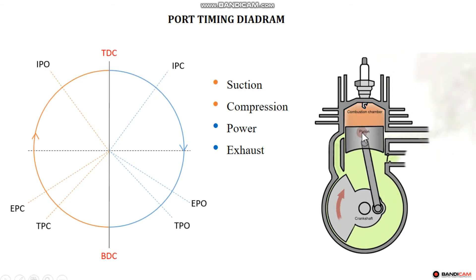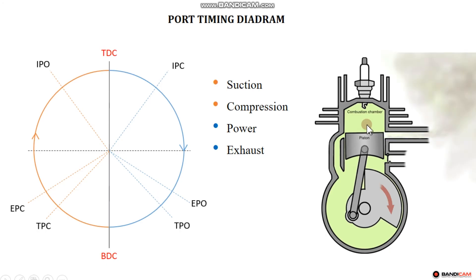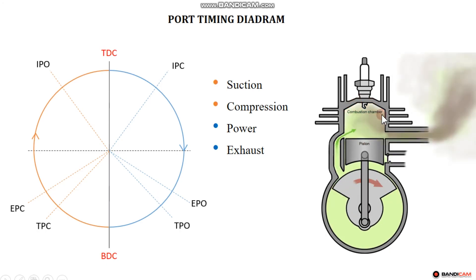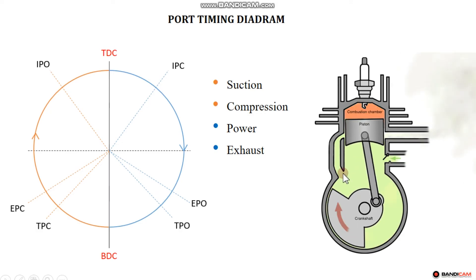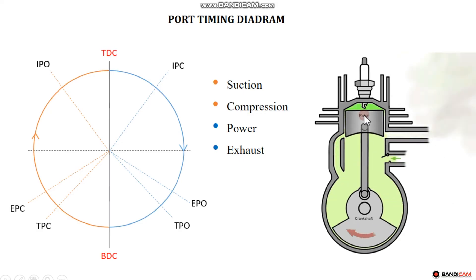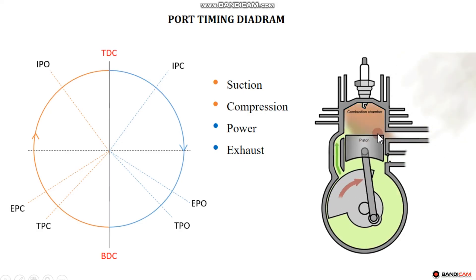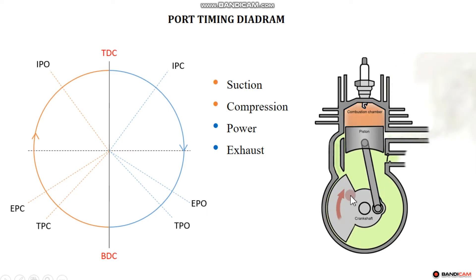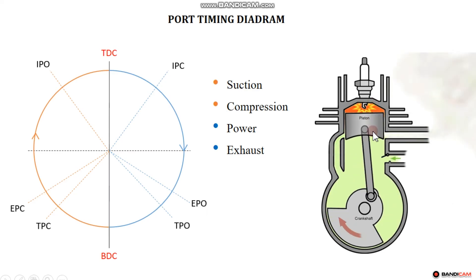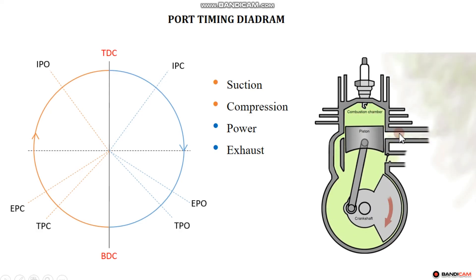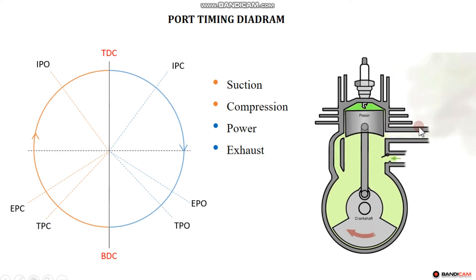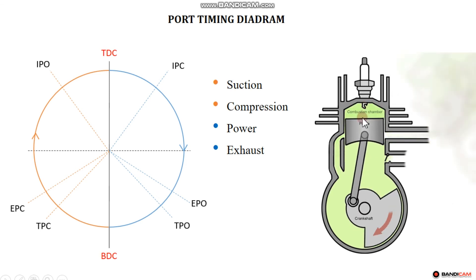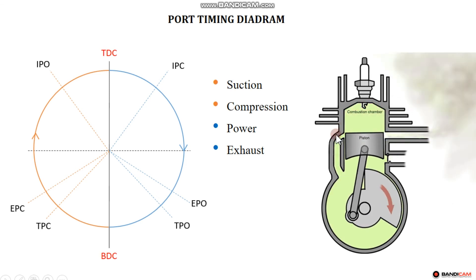This process is called scavenging — the process of removal of burned gases by using fresh charge. When fresh charge enters, the pressure inside expands. The pressure becomes less than the incoming charge pressure, and the burned gases are pushed out. That is scavenging.